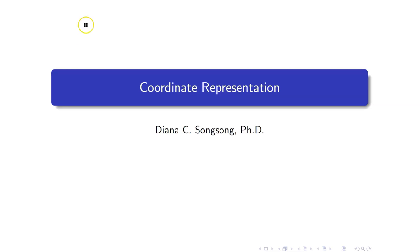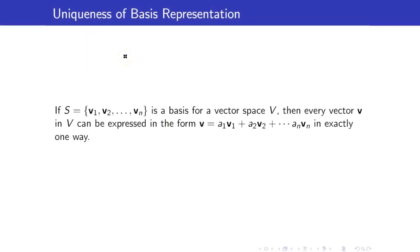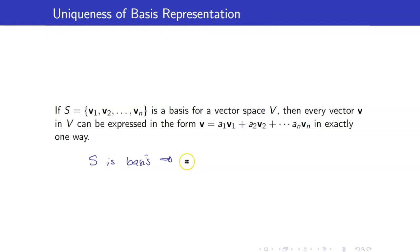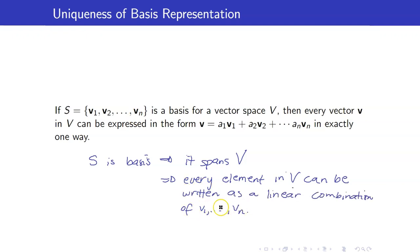In this section, I am going to talk about coordinate representation. Suppose that we have a basis for a vector space V. Since S is a basis, it spans V, which means that every element in V can be written as a linear combination of these vectors. We can write every element as a linear combination of the vectors V1 up to Vn.